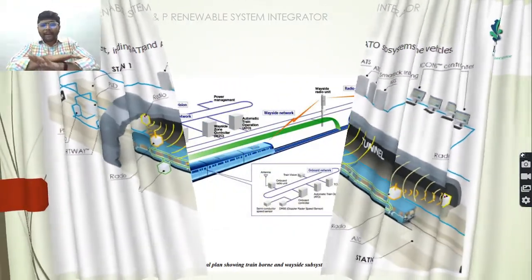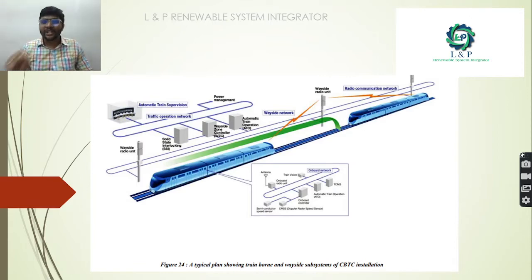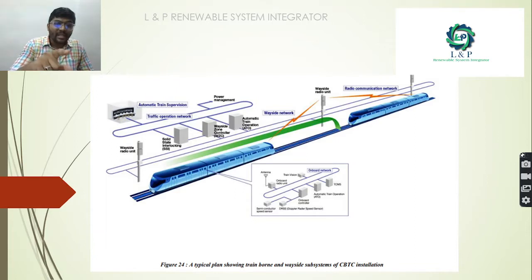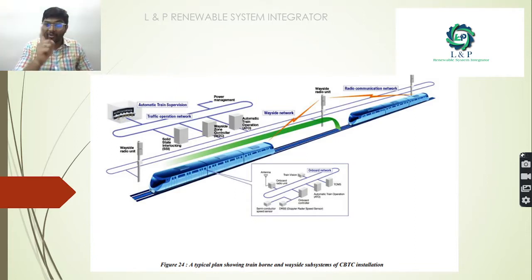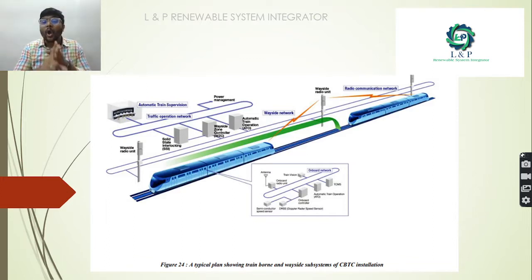This is a typical plan showing the train on-board and wayside installation of CBTC. You can see a wayside network and a radio communication network. Inside the wayside, there is an ATC — automatic train control — and a traffic operation network supported by a power management system, plus solid-state interlocking and wayside zone controllers.